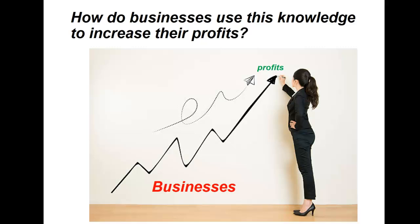Discounting policies: when demand is elastic, companies use seasonal discounts to encourage purchases when demand fluctuates, limited-time promotions to create urgency and boost short-term sales, and product bundling — for example, buy-one-get-one-free offers — to increase perceived value and drive purchases.